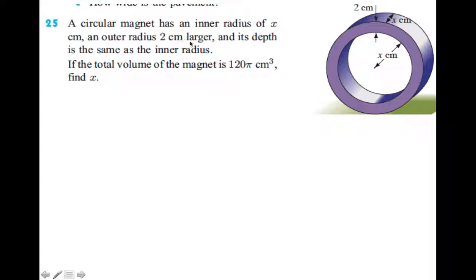An outer radius two centimeters larger. So outer radius means when you go from the center all the way to the outside. So inner was center to here, outer is center all the way to the outer edge.